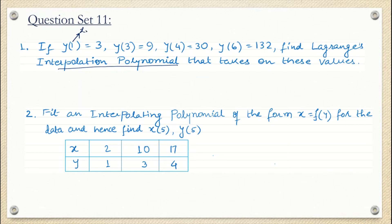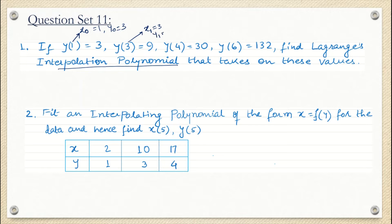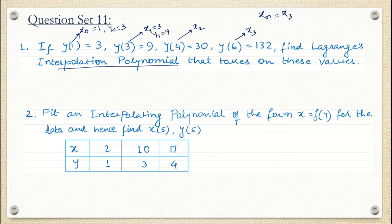This 1 is x0 because y at x0 is 3, so x0 is 1 and y0 is 3. This 3 is x1, x1 is 3 and y1 is 9, and so on. This is your x2 and this is your x3. So four data sets are given, xn is x3, meaning n is 3.